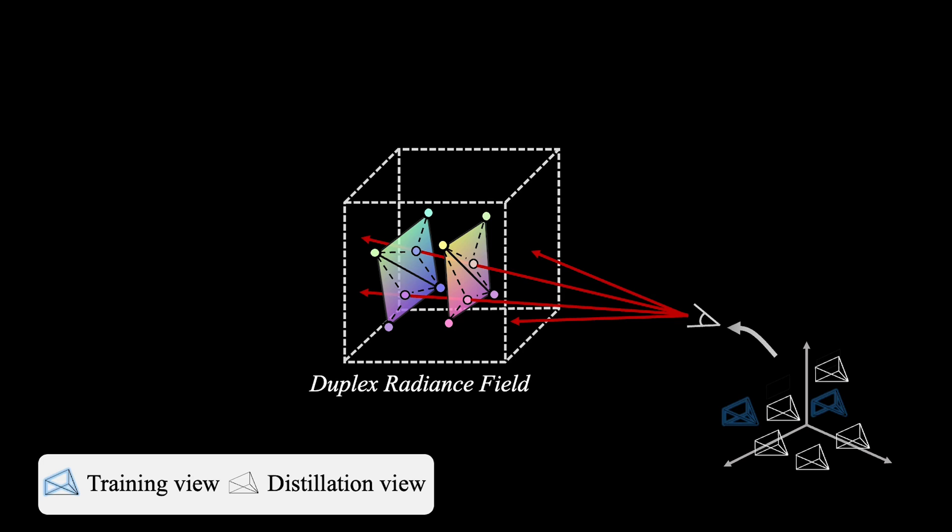We observed that neural duplex radiance fields trained from scratch will produce many spatial high-frequency artifacts. So the distillation views generated from the original training distribution are further included into the optimization to fully leverage the capability of pre-trained NeRF.